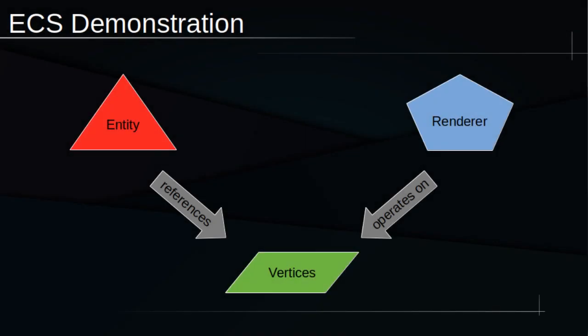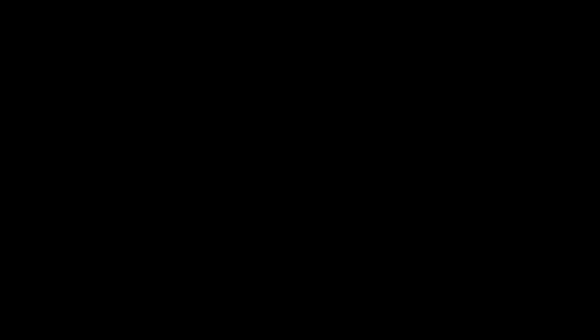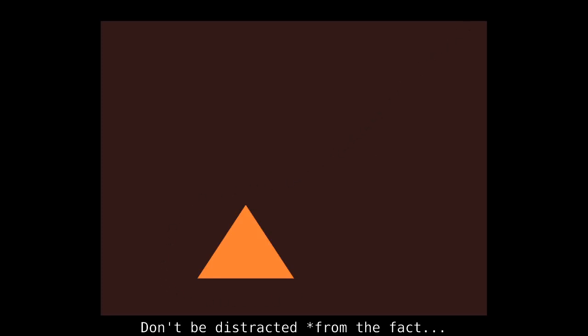I'm going to create an entity which, as I said earlier, is just an ID. I'm going to assign it a vertices component to give it a shape, and then I'll use the render system to render this entity to the screen. The render system simply operates on the vertices component to draw each vertex to the screen. When I execute this program, we see this spectacularly underwhelming triangle. At first glance, you're probably a little disappointed, maybe even feeling like I deceived you, but don't be distracted by the fact that all this was accomplished using ECS.